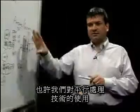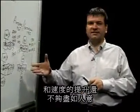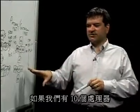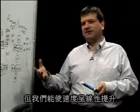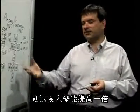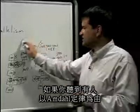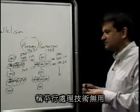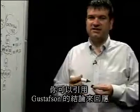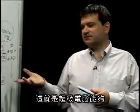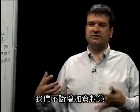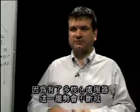Gustafson's observation basically says: if we keep increasing the amount of work we want to get done — which is the history of computing — the serial portions have diminishing impact, and we can see speedups on the order of the number of processors we have. It may not be perfect speedup — with 10 processors we don't necessarily get 10-fold speedup — but we do get linear speedup. We can expect 20 processors to give us roughly double the performance of 10. So if you ever hear Amdahl's Law quoted as a reason parallelism won't work, Gustafson had an explanation. This is really key to why supercomputers have been successful, and the same will hold for multi-core processors.